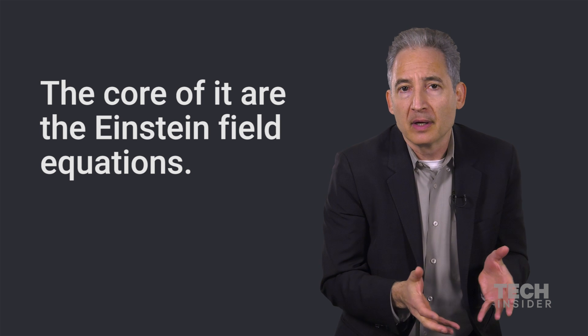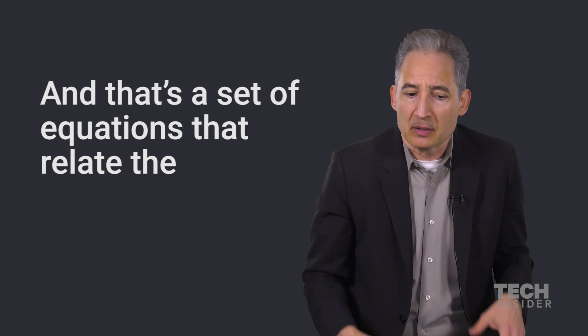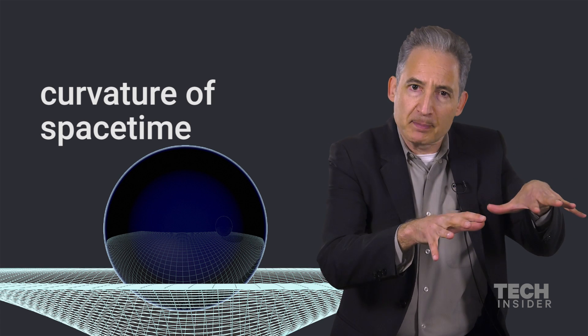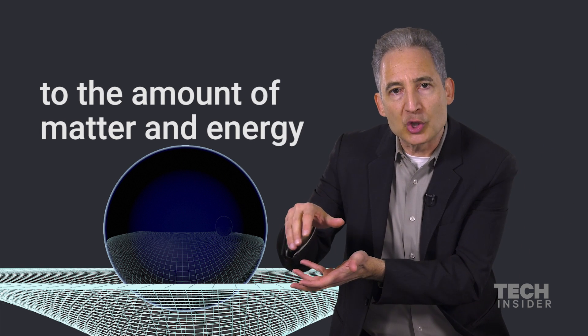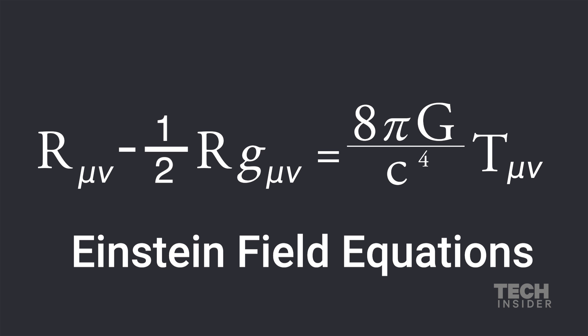The core of it are the Einstein field equations, and that's a set of equations that relate the curvature of space-time to the amount of matter and energy moving through a region of space-time. If you like equations, it's R mu nu minus a half g mu nu R equals 8 pi G over c to the fourth T mu nu. Those are the Einstein field equations.